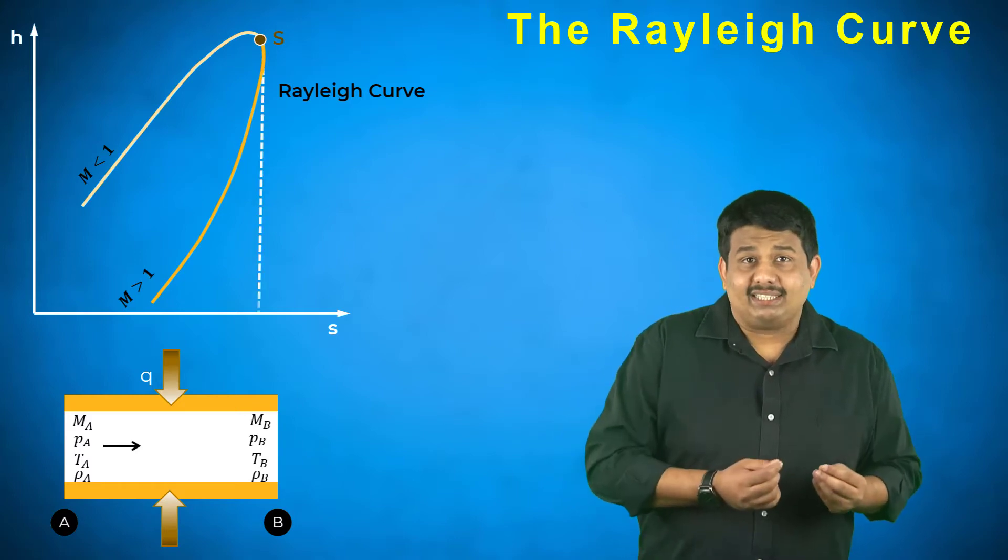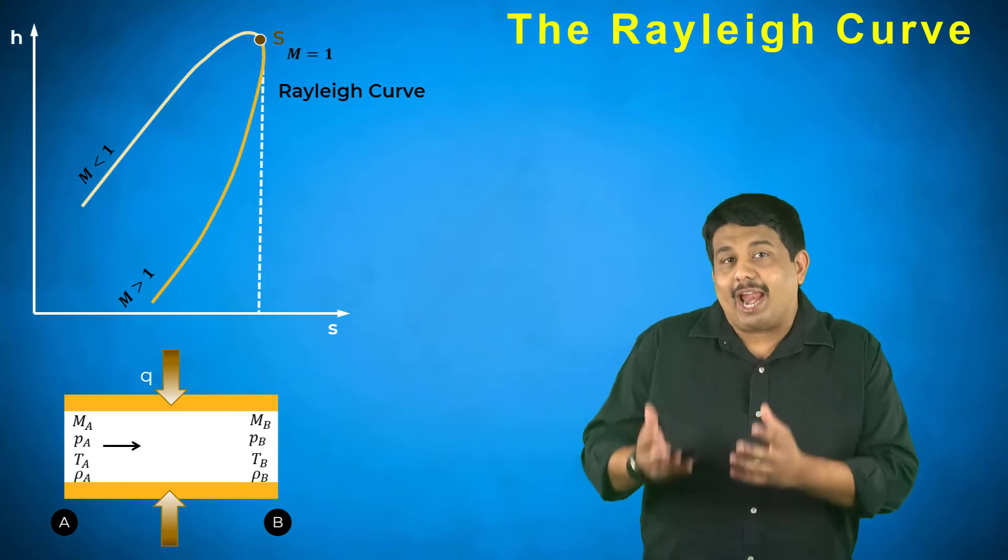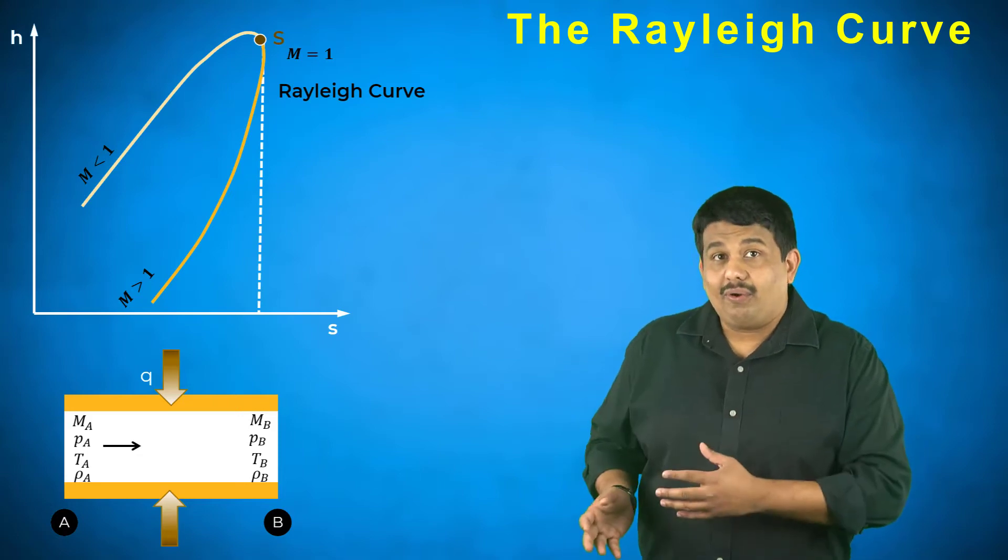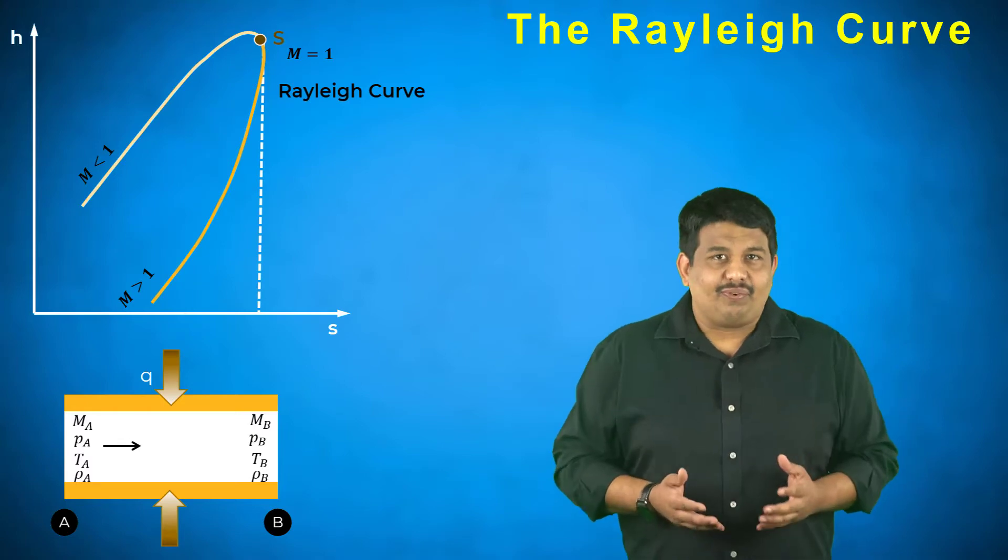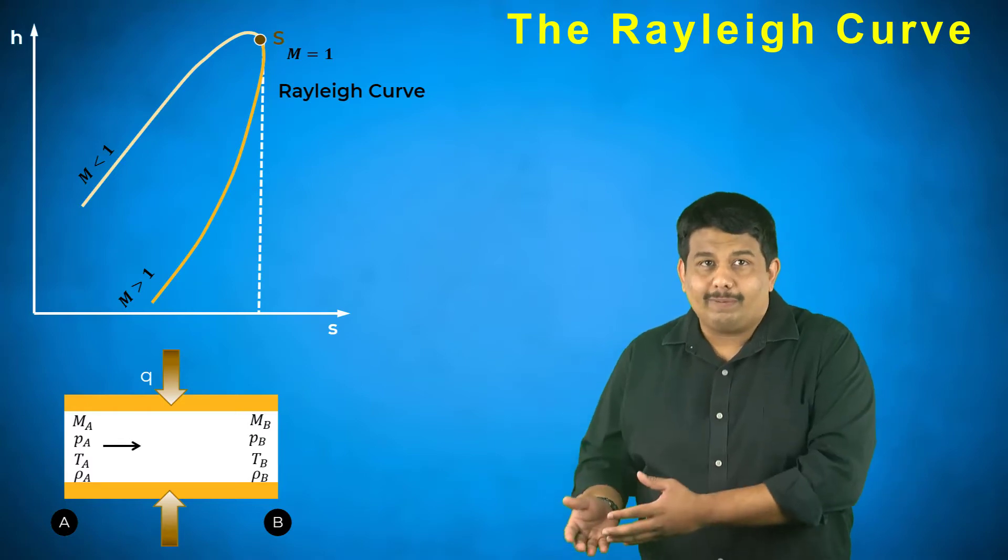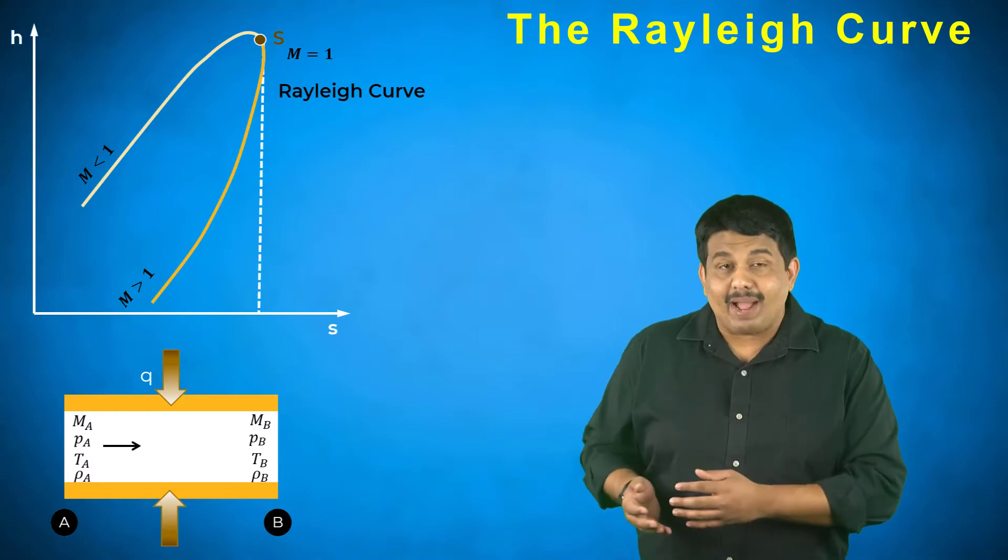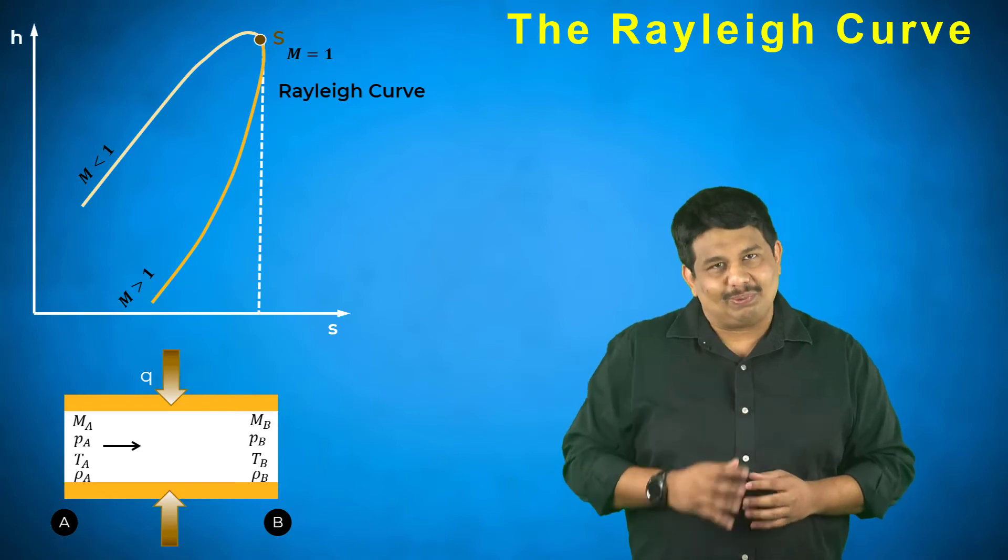The upper branch of the curve represents subsonic flows and the lower one is for supersonic. At point S, which represents the maximum entropy state for a given flow, the flow velocity is sonic. Let us first focus our attention on the lower branch and understand the impact of heat addition on the supersonic flow.